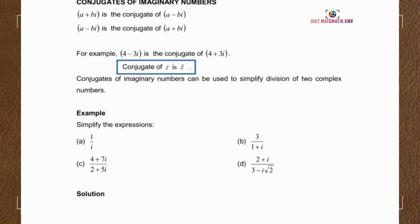For example, 4 minus 3i is the conjugate of 4 plus 3i. The conjugate of a complex number z is denoted by z-bar. Conjugates of imaginary numbers can be used to simplify a division of two complex numbers.